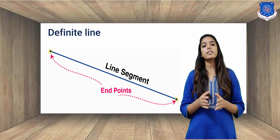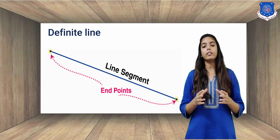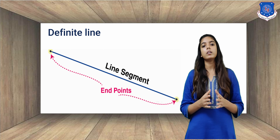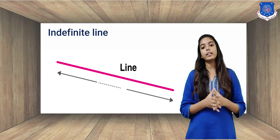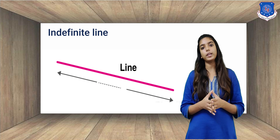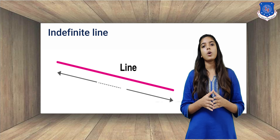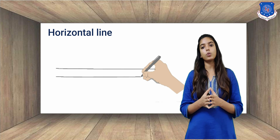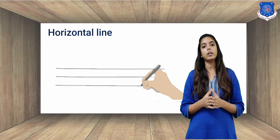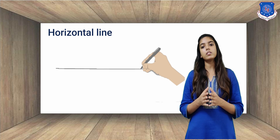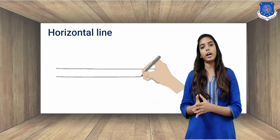What is a definite line? It is one in which there is a particular fixed distance between two points. What is an indefinite line? It is one in which the distance between two points is not fixed. What is a horizontal line? A line parallel to the horizon is called a horizontal line. The horizontal line is one that runs across from left to right.